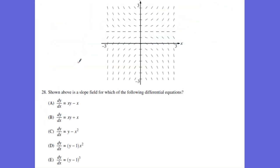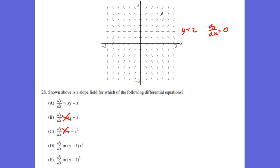Number 28 is one of our more favorite problems. We can see right away that at y = 2, for every x value the slope equals 0, which eliminates choices B and C. We still have A, D, and E. Plugging in (3, 3) or (2, 2) we should get a positive slope, and plugging in (-2, 2) we should get a negative slope, which means A is the only answer left.